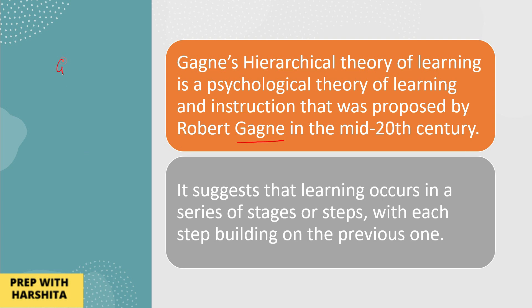Basically, what happens in this theory? Suppose if I talk about our grandfather, then the son, then our father, and then we are all. Also, if we talk about the school level, there is a principal, after the principal there is a headmaster, after the headmaster there is a teacher, and after the teacher there is a student who is studying. So this hierarchical progression is what this theory is about — there is one thing, then another thing, and then another thing. This is why this theory is called a hierarchy.